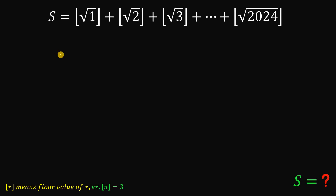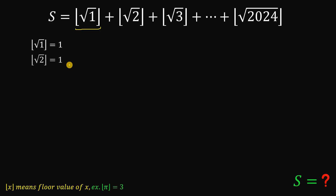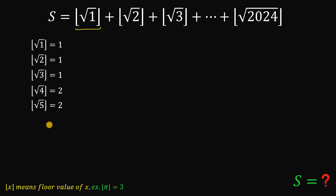How do we answer this kind of question? Let's list some terms in S. The floor of square root of 1 — square root of 1 is 1, so the floor value of 1 is still 1. The floor value of square root of 2 is 1, because square root of 2 is 1 point something. Square root of 3 is also 1. But square root of 4 is 2, so the floor value of square root of 4 is 2. The floor value of square root of 5 is also 2.